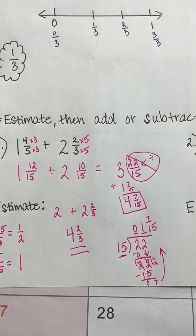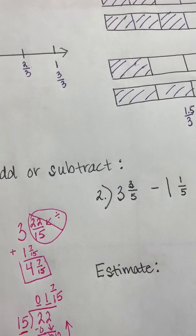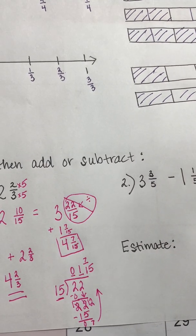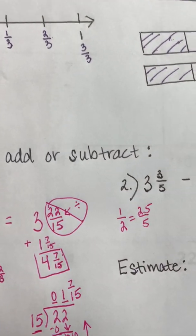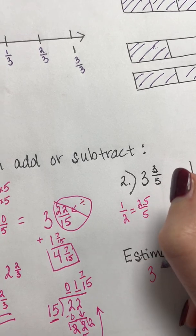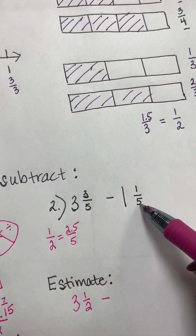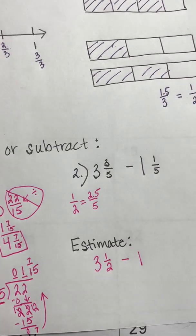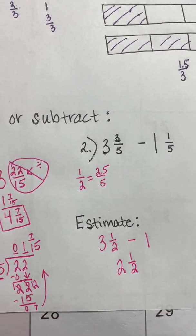Let's look at number two: three and three-fifths minus one and one-fifth. For the estimate, I know that in fifths, one-half would be 2.5 out of five. Three-fifths is really close to one-half, so I'll call it three and a half. Then one-fifth is super close to zero — it's pretty small — so I'll just call this a one. My estimate is three and a half minus one, which is two and a half.